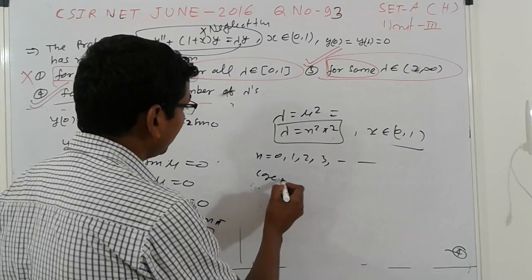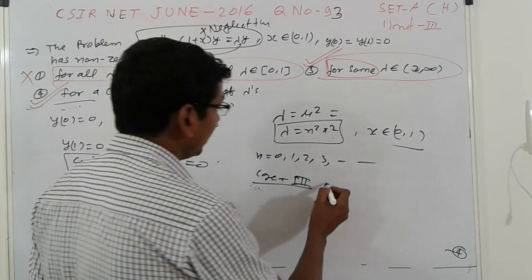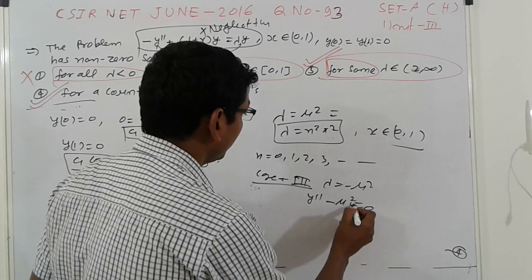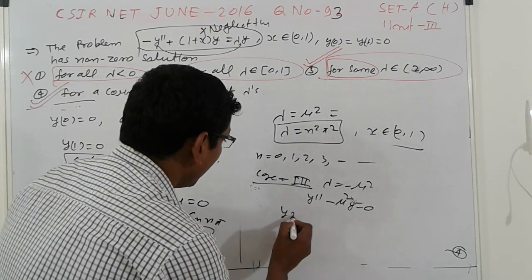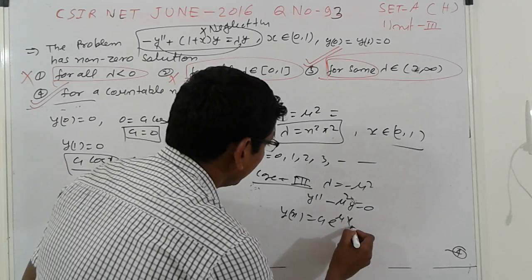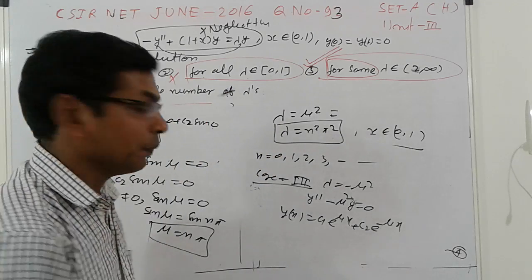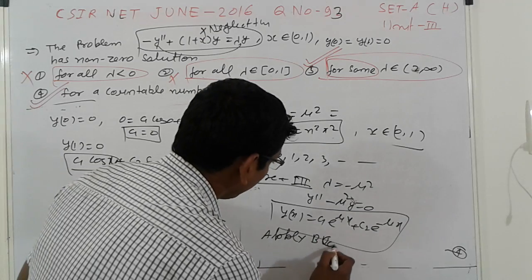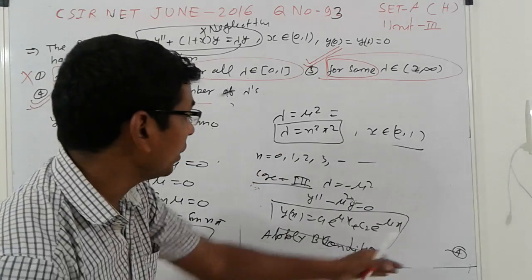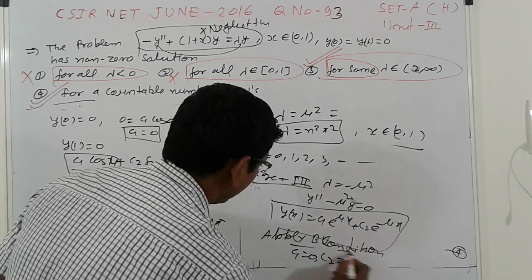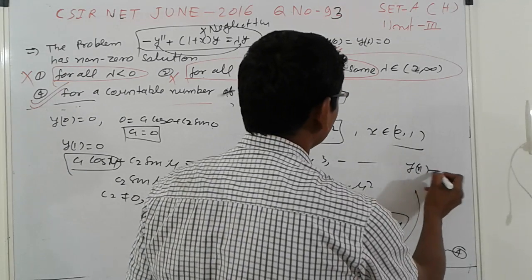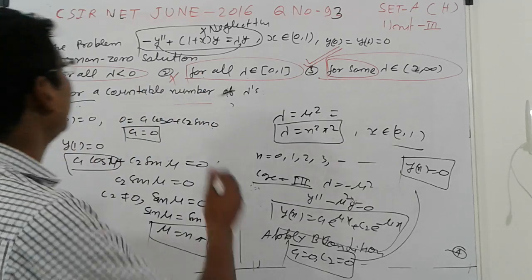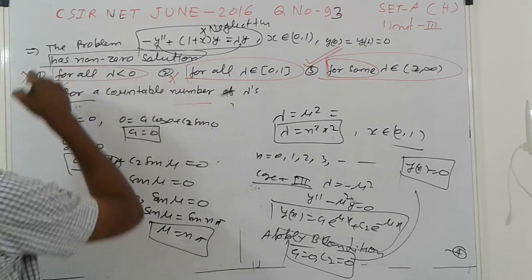Case 3: Suppose λ < 0, write λ = −μ². The equation becomes y'' − μ²y = 0. The general solution is y(x) = c₁e^(μx) + c₂e^(−μx). Applying boundary conditions y(0) = 0 and y(1) = 0 forces c₁ = 0 and c₂ = 0, giving the trivial solution y(x) = 0. So negative λ values are not eigenvalues; they yield no non-trivial (non-zero) solutions.